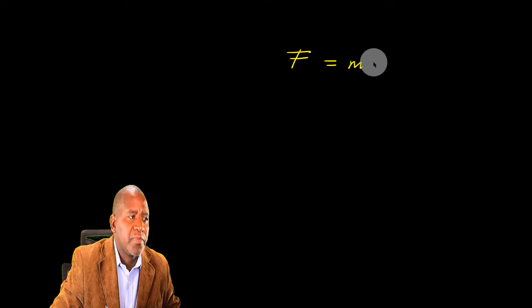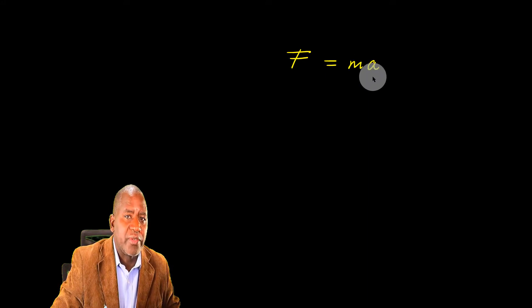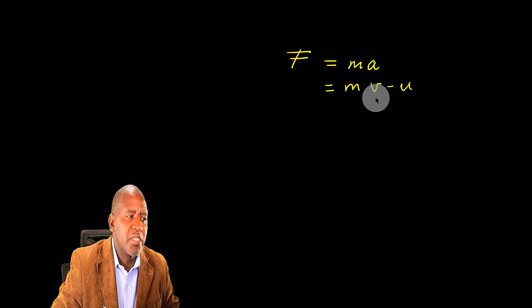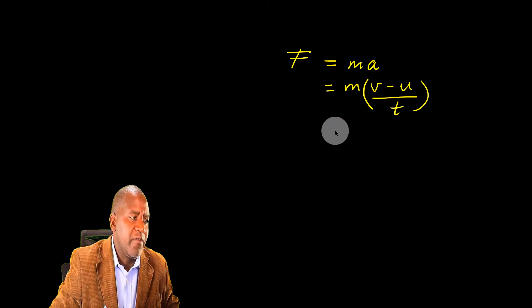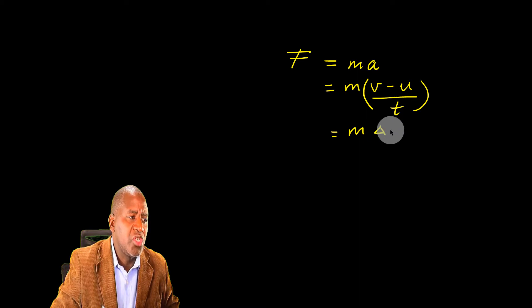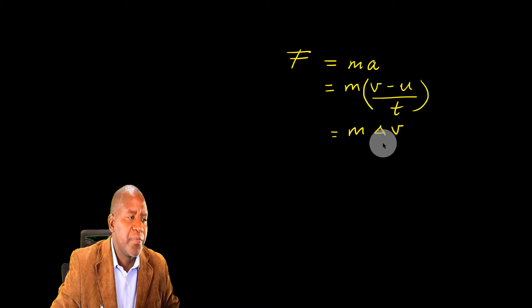I want to start from this situation where I say that resultant force F is given by the mass times the acceleration. If I break down this equation, the acceleration is final velocity minus initial velocity over the time. If I break down that one further, I'm going to see that V minus U is change in velocity, and of course, there is time.